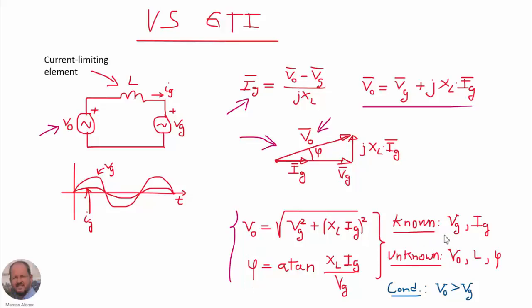We have two known values: the grid voltage and the current we want to inject. The unknowns are VO (the output voltage we need to generate), the inductance, and the phase angle phi between the two voltages. There is also a condition: the output voltage VO must have an amplitude greater than VG, as seen in the phasor triangle. We have two equations and three unknown parameters, so we can fix one of them and calculate the other two. For example, we can fix the value of the inductance and then calculate the required VO and phi.